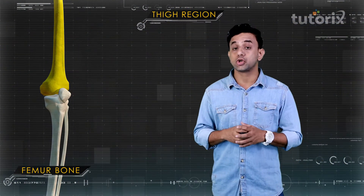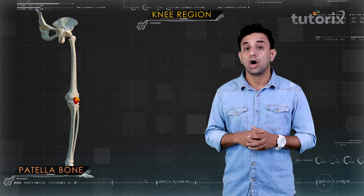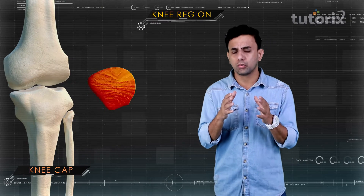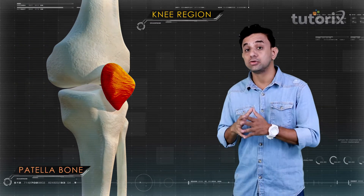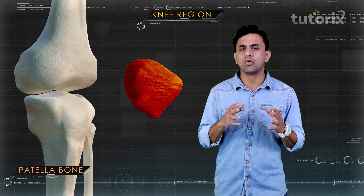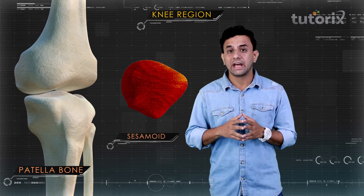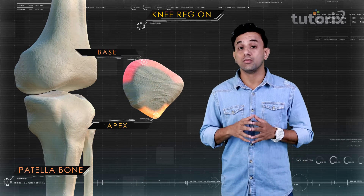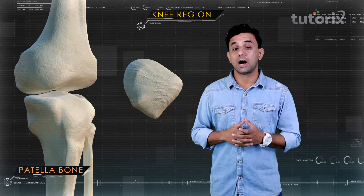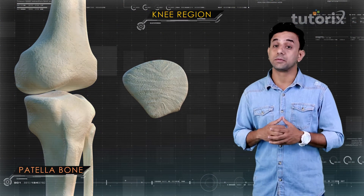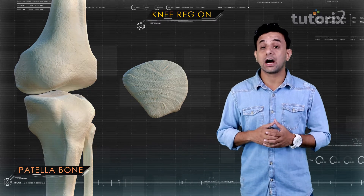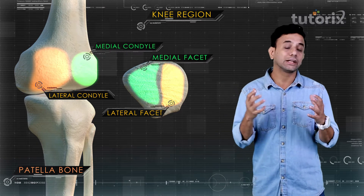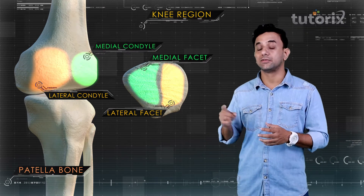The patella is also known as the kneecap. It is a small triangular sesamoid bone located anteriorly to the knee joint, having a broad proximal base and a pointed distal end called the apex. The posterior surface of the patella has two articulation facets — one for the medial condyle of the femur and the other for the lateral condyle of the femur.